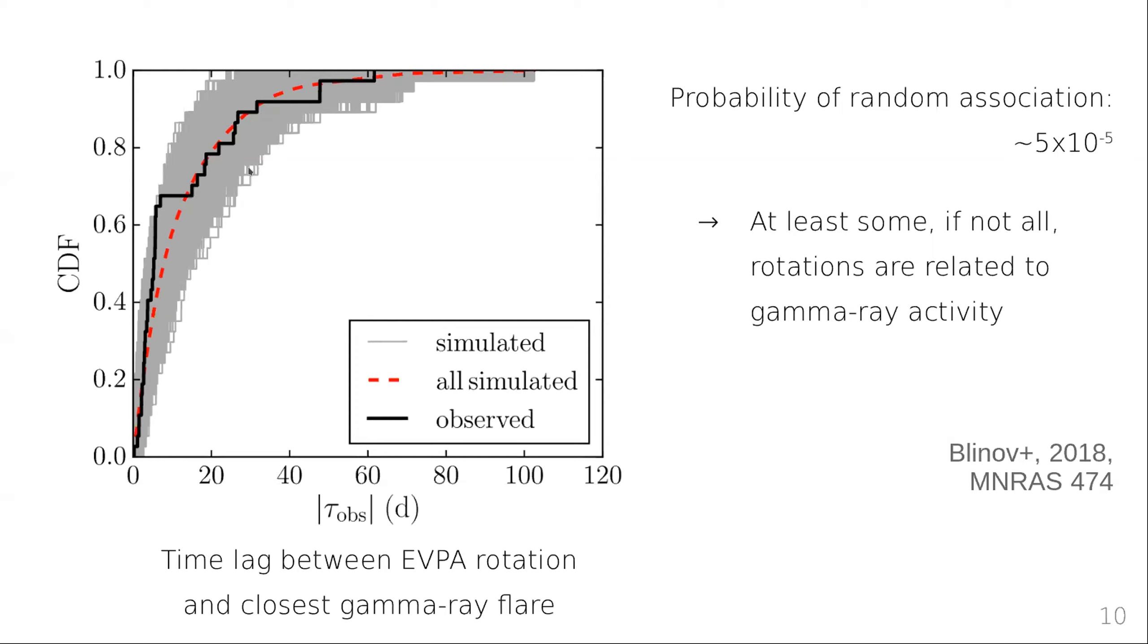Then we ask the question, how likely is it that such a simulated distribution of time delays lies completely to the left, so to shorter time delays than what we observed? The probability is fairly low. So we rejected our hypothesis that this distribution is a result of random associations that happen just as coincidence. The implication, of course, is that at least some, if not all, rotations are related to gamma ray activity.